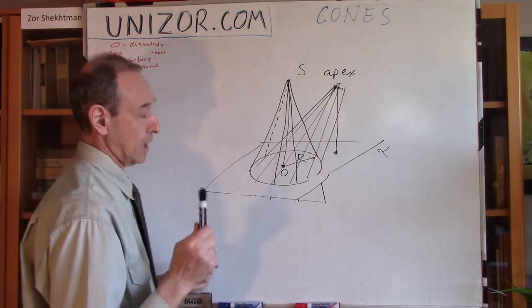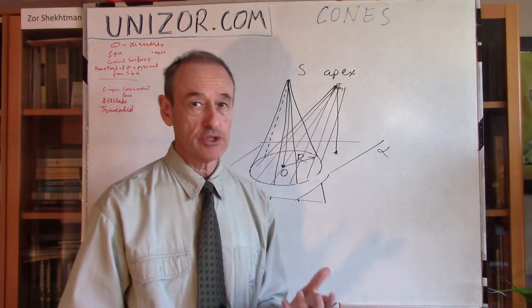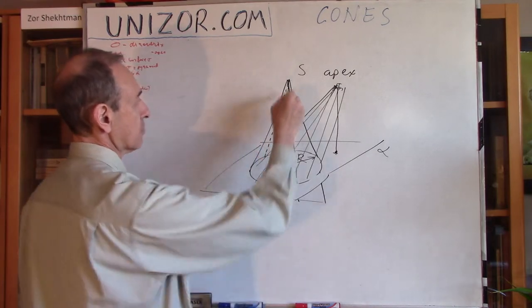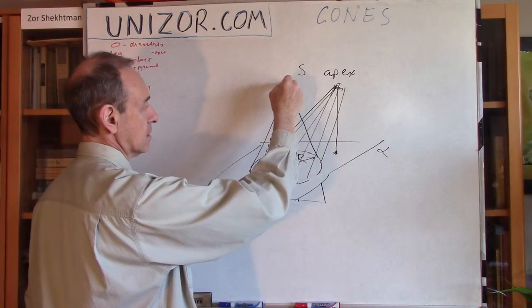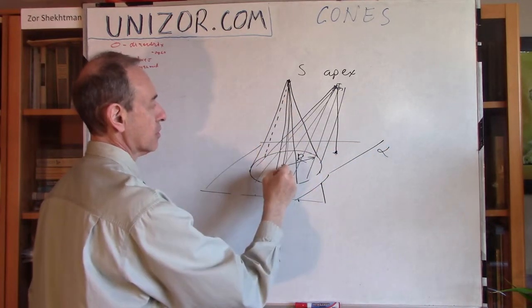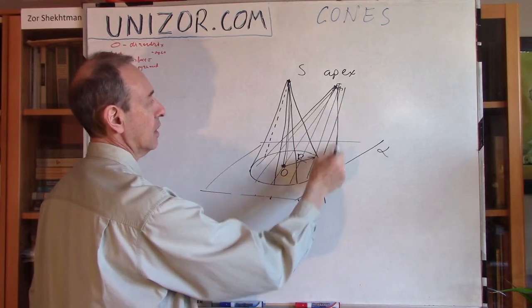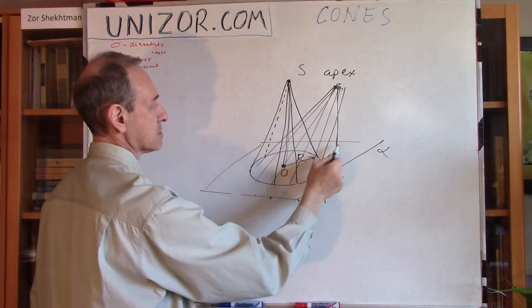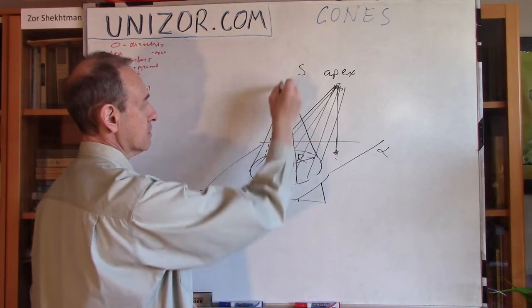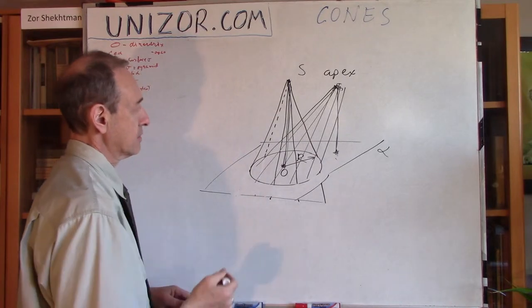Okay, now, what else? Another concept is an altitude of the cone. Now, the altitude is basically this segment which connects the apex with the plane through a perpendicular line. Well, in this case, this is also an apex, an altitude, which connects the apex to the plane through a perpendicular. So, this is an altitude or height of the cone. Just another term.